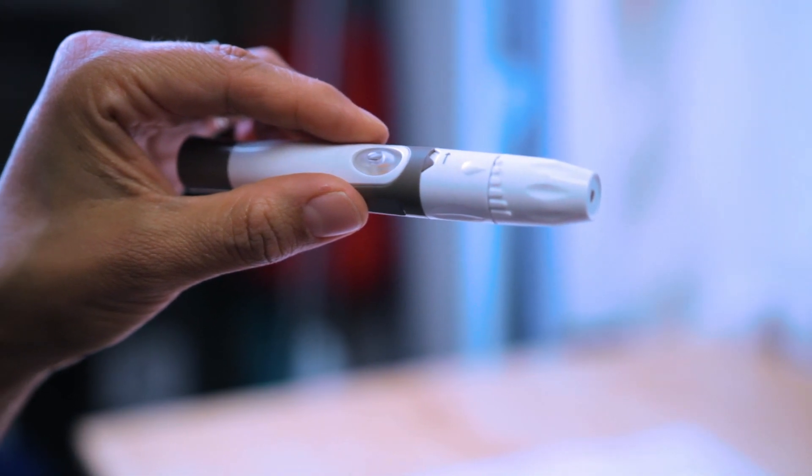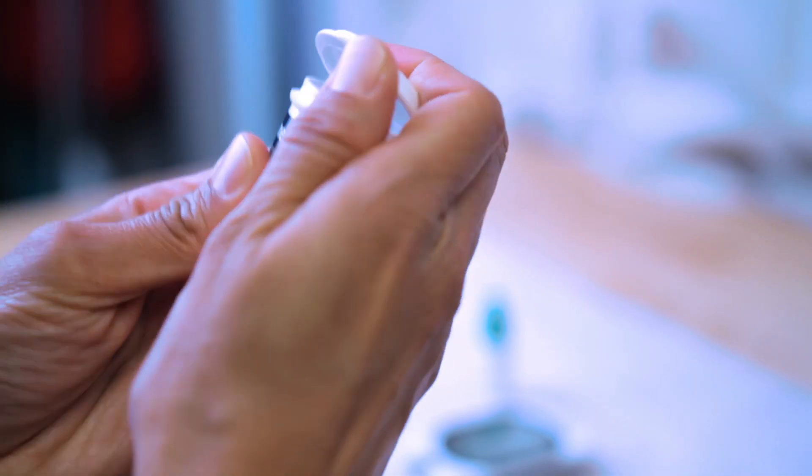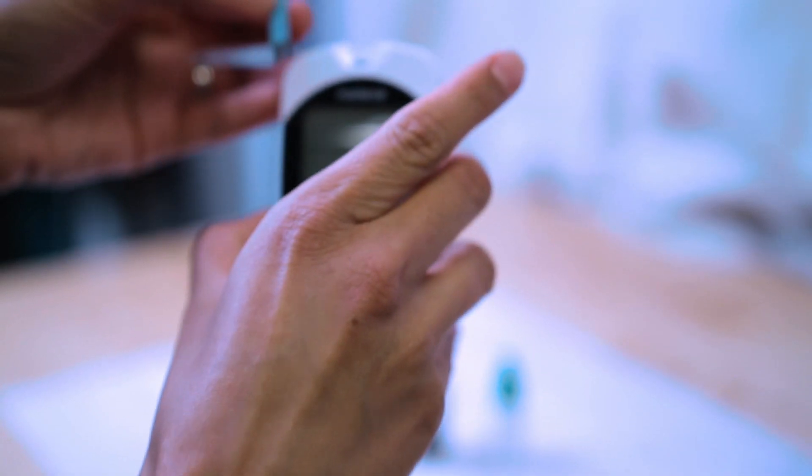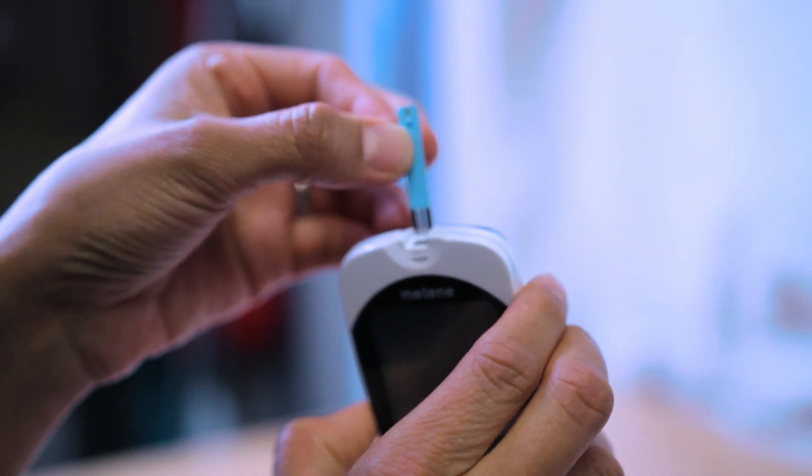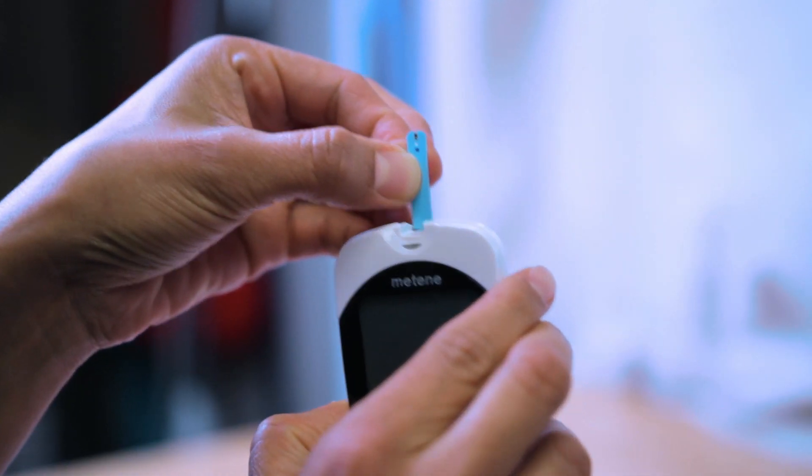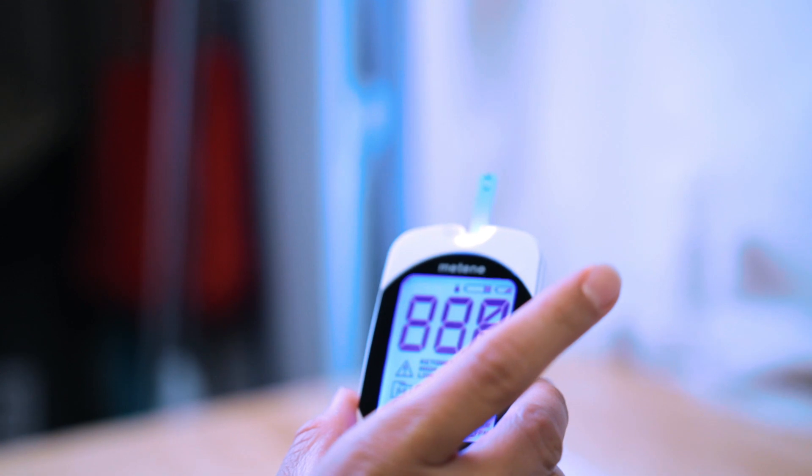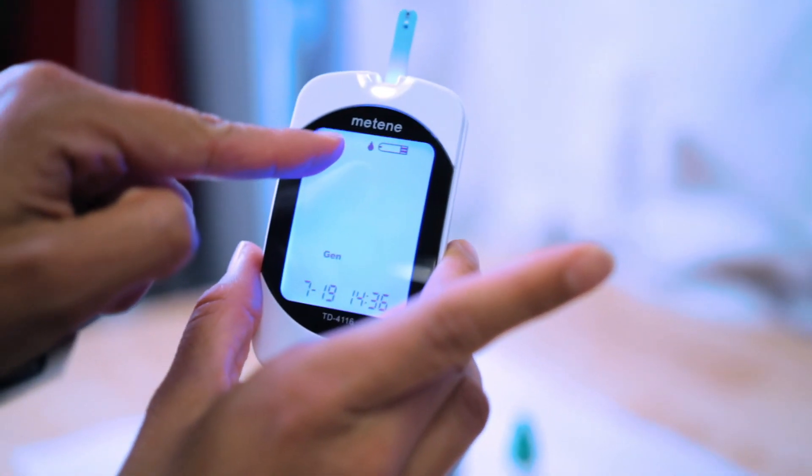Now we're going to put the strip inside the glucometer. I'm going to get one strip out—just pull out one—and then you close it immediately. Then I'm going to put the strip in here. I'm going to let it turn on, and it's checking, it's reading. Now I know it's ready because there's a dripping blood sign there. So now that tells me that it's ready, so I'm going to